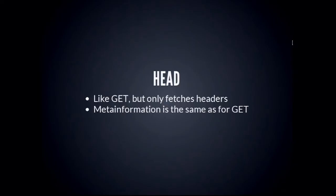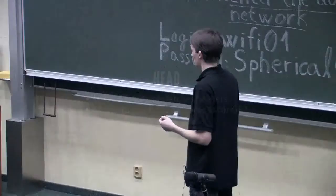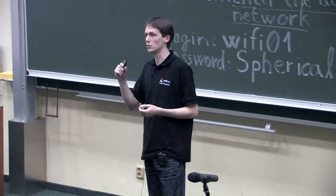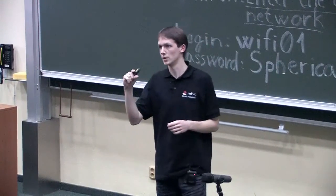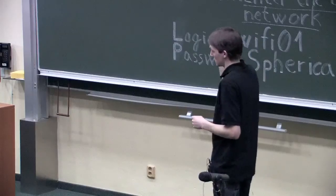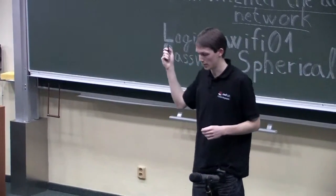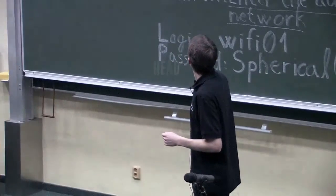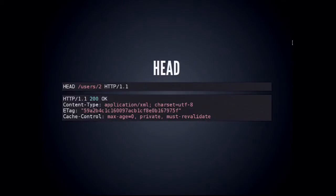The HEAD request is the first of the introspection methods. It's used, for example, to check the state of your cache without fetching data, or just to check whether a resource exists. It works like GET but the response body is omitted — meta information stays the same. With HEAD, you still get 200 OK even though the response contains no data. Some headers are useful for cache validation, like checking whether a cached copy is up to date.